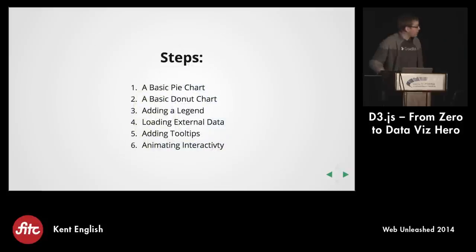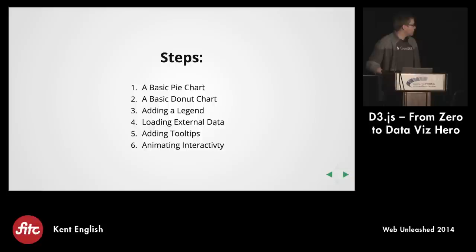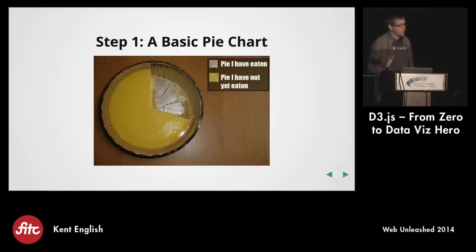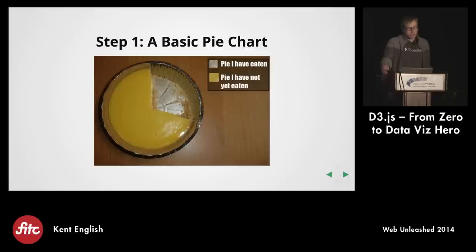So let's get started, because there's a lot to cover. We're going to look at a pie chart, then turn it into a donut chart, add a legend, load some external data, add the tooltips, and then finally add the filtering and the animations. There's probably a few data scientists in the crowd thinking gross, a pie chart, why would you use that? Pie charts are not the best for conveying information visually, but we're not concerned about that today. We just want to learn D3, and for learning D3, the pie chart is actually one of the better ones to look at.